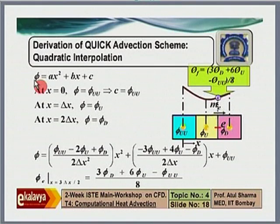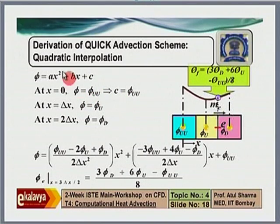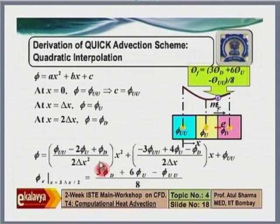For the QUICK quadratic expression with origin at UU, constants A, B, C are determined from φ at x=0, Δx, 2Δx. Substituting x = 3Δx/2 gives: φ_e = (3/8)φ_D + (6/8)φ_U − (1/8)φ_UU. The weights are: 37.5% to the downstream neighbor, 75% to the upstream neighbor, and −12.5% to the upstream-of-upstream neighbor. The sum of weights: 37.5 + 75 − 12.5 = 100%, confirming unity. This derivation assumes uniform grid spacing; for non-uniform grids the coefficients include the actual distances.